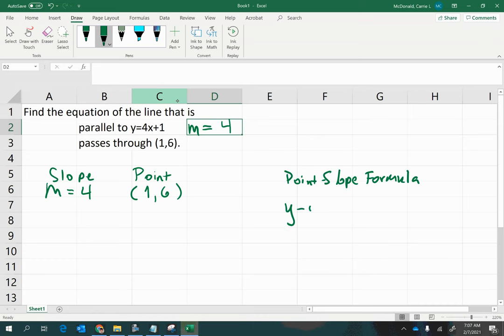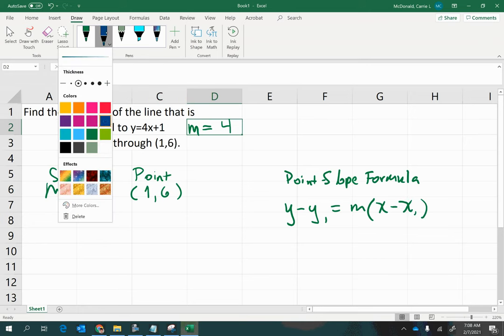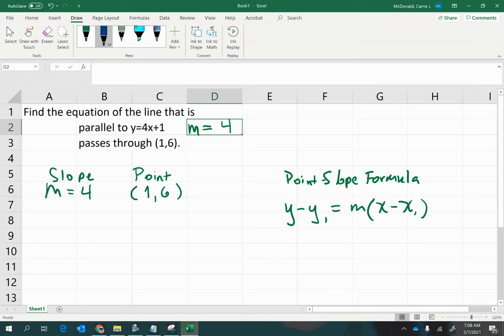y minus y1 equals m times x minus x1. So we're just going to come in and plug in the items that we have. We have a y value of 6, we have a slope of 4, and we have an x value of 1, and that is it.